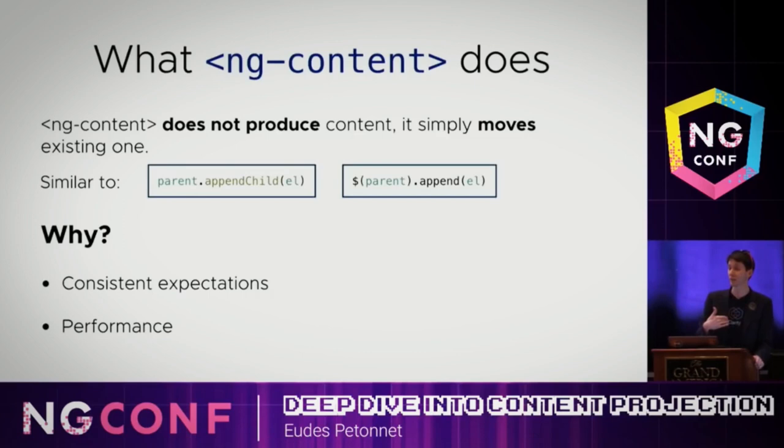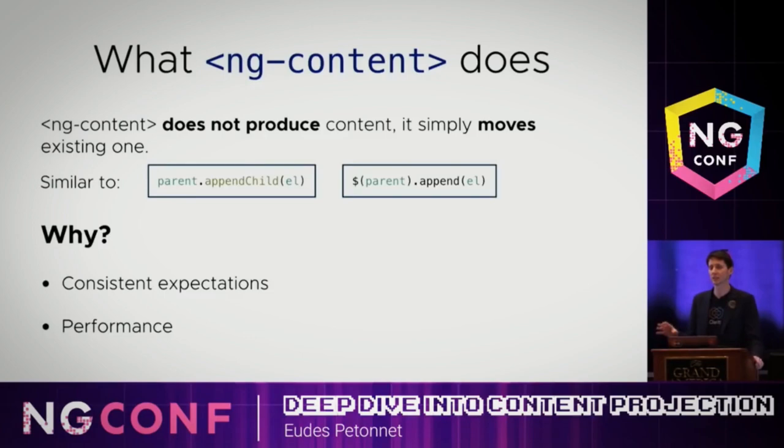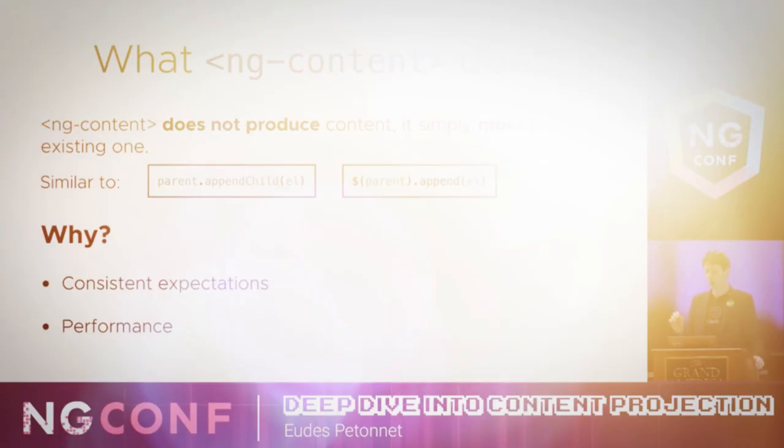In the case of several ng-contents, the first one would get the sheep — it would match on every single one of them — but only the last ng-content would actually get the sheep. So why does Angular do this? The main reason, before anything else, is that you have consistent expectations.